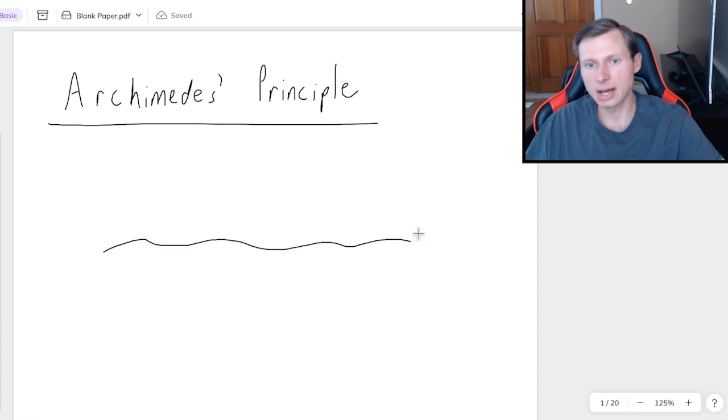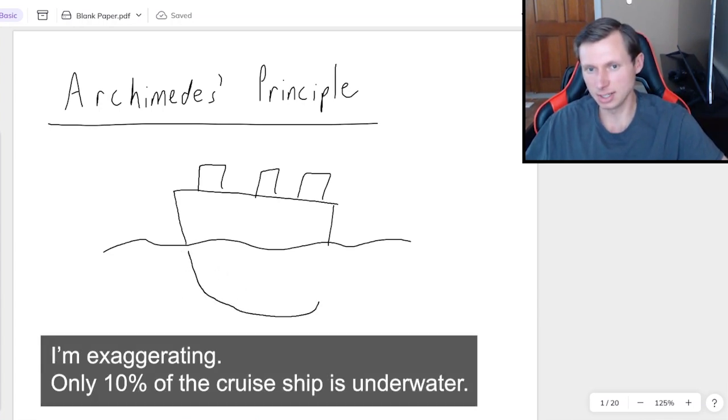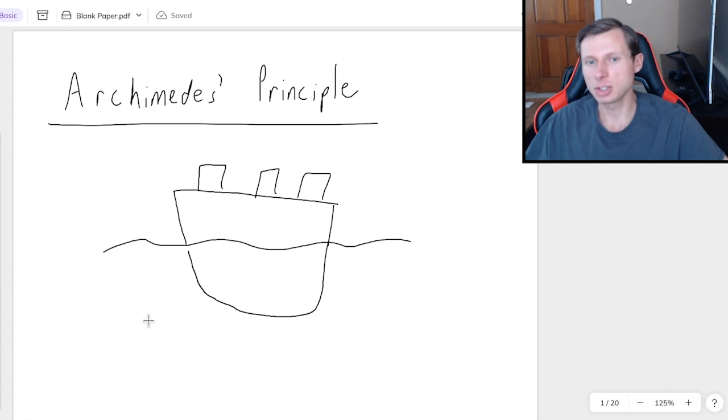It basically explains how very heavy objects such as a cruise ship are able to float in the water despite being thousands and thousands of kilograms large. Well, the truth is just like an iceberg, a lot of a cruise ship is actually under the water. Now obviously we know in order to float the cruise ship needs to be less dense than the water, or else it's gonna sink if it's more dense.